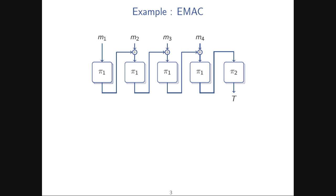Let's look at a concrete example: EMAC, a very well-known PRF. The way it works is you take your message, chop it into blocks, and process the first block through a random permutation — in practice a keyed block cipher. Then you XOR the output with the next plaintext block and continue. This first part is often called CBC-MAC. The last part is another permutation call, usually with an independent key, which is why it's called Encrypted CBC-MAC or EMAC.